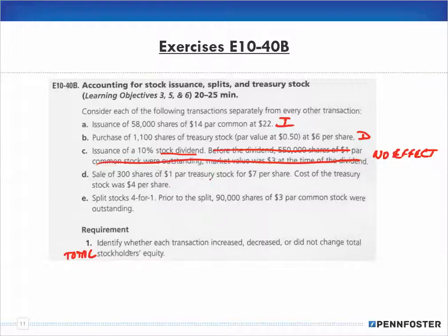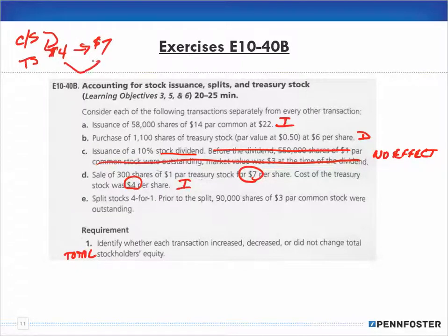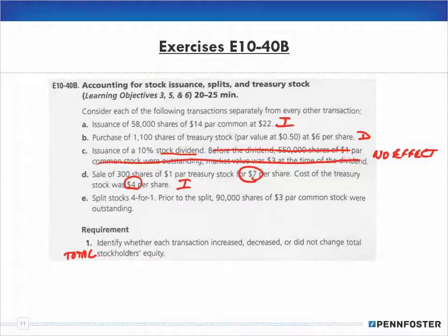Transaction D: sale of 300 shares of $1 par treasury stock for $7 per share; cost of the stock was $4 per share. This is going to increase our equity. We bought it back at $4 and we're selling it back into the marketplace at $7, so there's an increase of $3 per share. Total equity will increase by $3 per share times 300 shares — that's an increase.